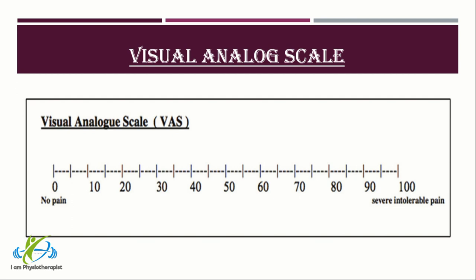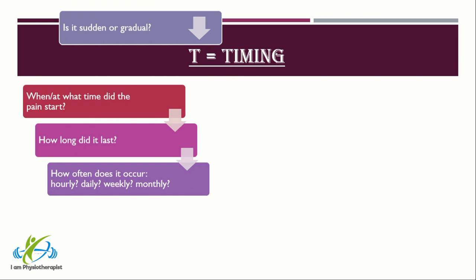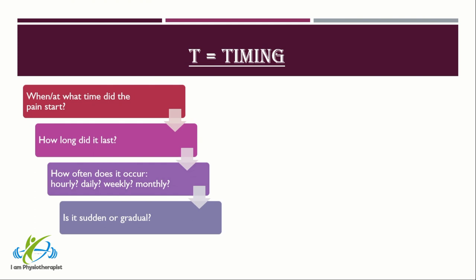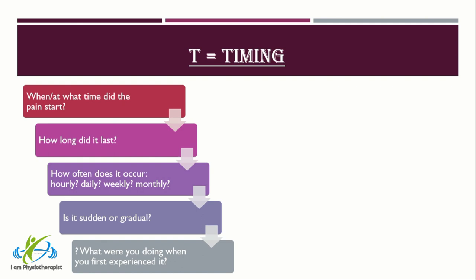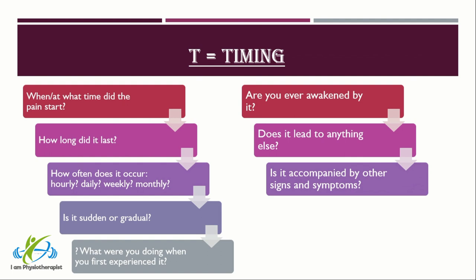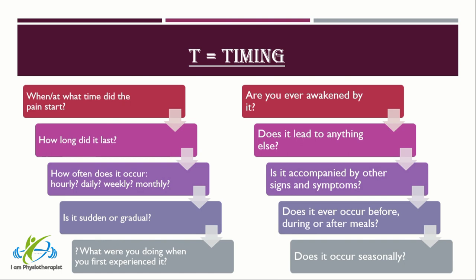T stands for Timing. Ask: When did the pain start? How long did it last? How often does it occur — hourly, daily, weekly, or monthly? Is it sudden or gradual? When do you usually experience it — daytime, night, or early morning? Are you ever awakened by it? Does it lead to anything else or is it accompanied by other signs and symptoms? Does it occur before, during, or after meals? Does it occur seasonally? All these questions are important to correctly identify the cause of the pain.